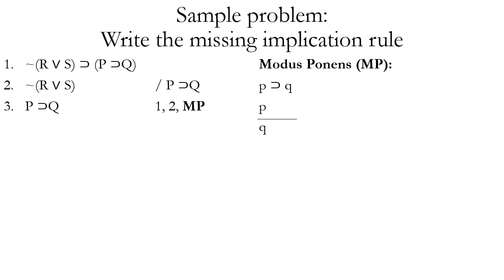The answer is MP or modus ponens, because that's the rule allowing you to prove the consequent of a conditional based on a premise matching the antecedent. Premise one is a more complex compound proposition, but the horseshoe is still the main operator. Line two, even though it's a negated disjunction, is identical to the antecedent of the conditional on line one — so it still fits the general pattern of modus ponens.